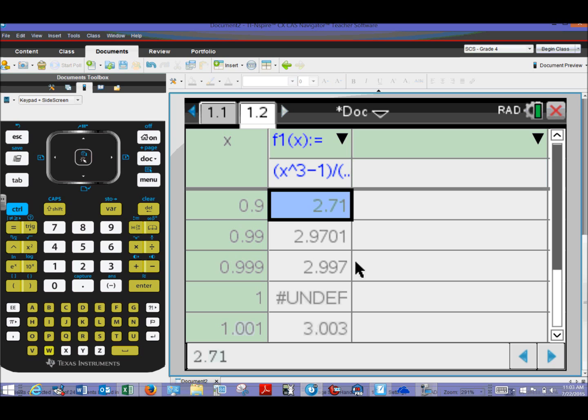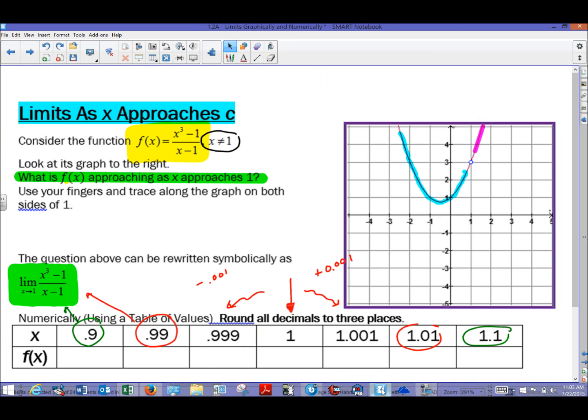And it is. And you would probably want to fill in all of these values in your chart if that's as part of the instructions of the particular assignment. What I'm going to do is just fill in the two that are close to the 1 to kind of finish off the notes here. So we'll say we had 2.997, I believe, right here. And I believe the 1.001 resulted in 3.003. And of course, 1 was undefined.